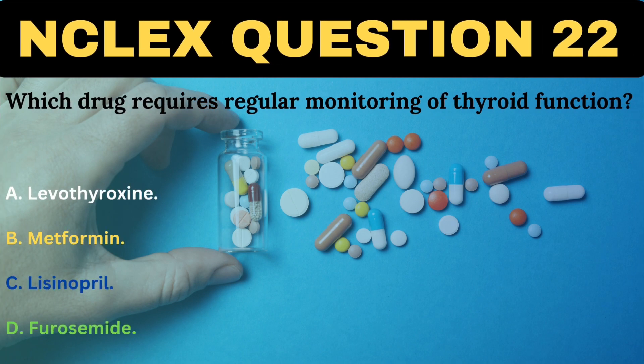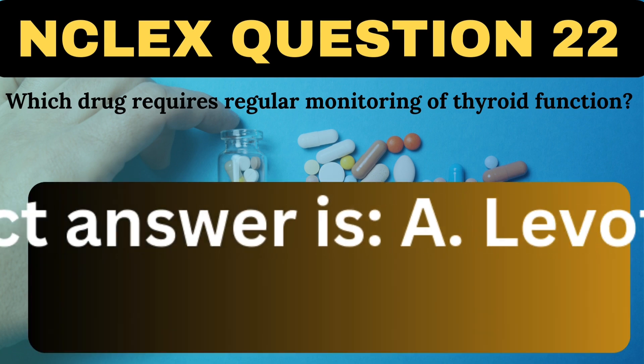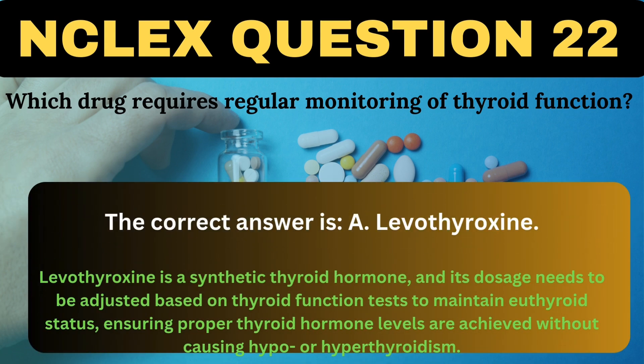Which drug requires regular monitoring of thyroid function? A. Levothyroxine. B. Metformin. C. Lisinopril. D. Furosemide. The correct answer is A, Levothyroxine. Levothyroxine is a synthetic thyroid hormone, and its dosage needs to be adjusted based on thyroid function tests to maintain euthyroid status, ensuring proper thyroid hormone levels are achieved without causing hypo- or hyperthyroidism.